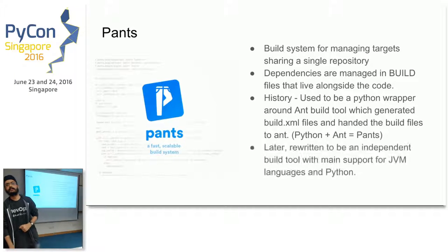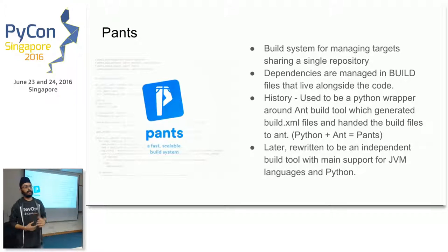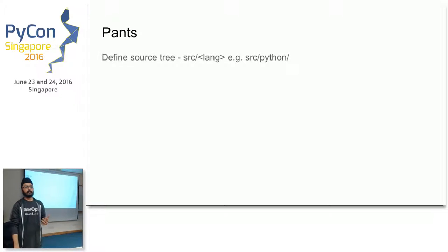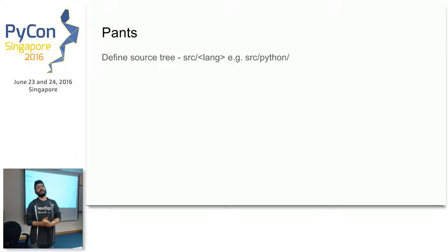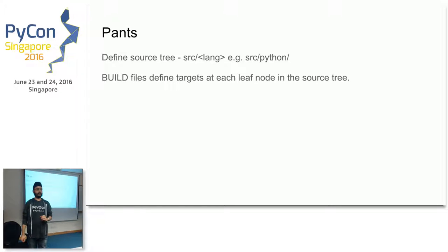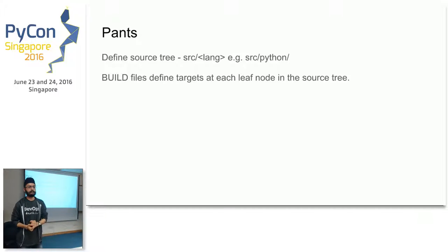It's just a weird name somebody came up with. PANTS was later completely rewritten to be an independent build tool with main support for JVM languages and Python, though other languages are also supported with plugins. In PANTS, you define a source tree — basically your monorepo — with a source folder containing multiple language directories like Python, Scala, and Java. Inside the source tree, each leaf node is your build target, and build files define the targets at each leaf node.